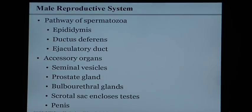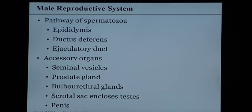Now that we know the pathway of spermatozoa, we talk about the accessory organs. There are three groups: the seminal vesicles, the prostate gland, and the bulbourethral gland. The scrotal sac encloses the testes, and the external genitalia being the penis.